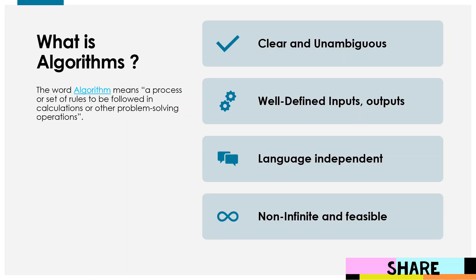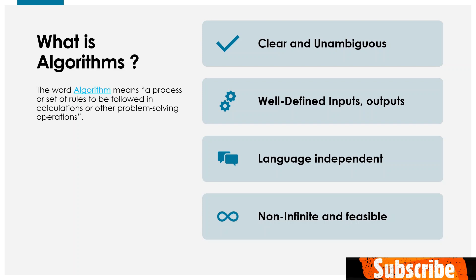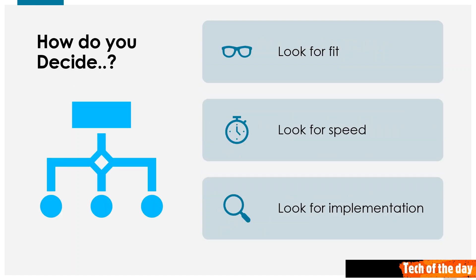Just for a quick review: what is a data structure, what is an algorithm, and how a well-defined algorithm should be — clear and unambiguous, with well-defined inputs and outputs, language-independent, non-infinite, and feasible. If you want to know more, please go and watch the previous video. This is just a recap.